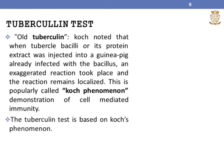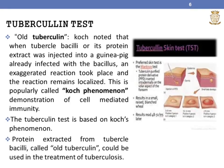Koch also discovered old tuberculin through the tuberculin test. He noted that when tubercle bacillin or its protein extract was injected into a guinea pig already infected with the bacillus, an exaggerated reaction took place and the reaction remained localized. This is popularly called the Koch phenomenon, and it is a demonstration of cell-mediated immunity. The tuberculin test is based on Koch's phenomenon. He erroneously found that the protein extracted from tubercle bacillin, called old tuberculin, could be used in the treatment of tuberculosis.